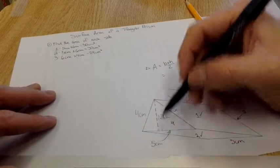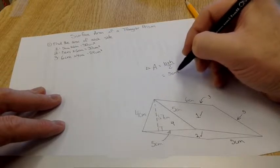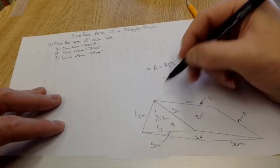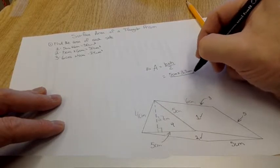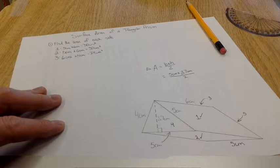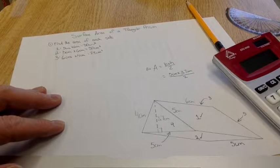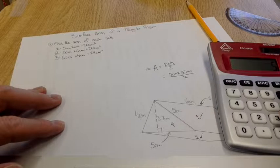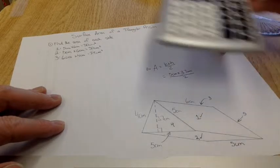And in this case, my base is 5 centimeters times 3.7 centimeters divided by two. Grab my calculator. 5 times 3.7 equals 18.5.